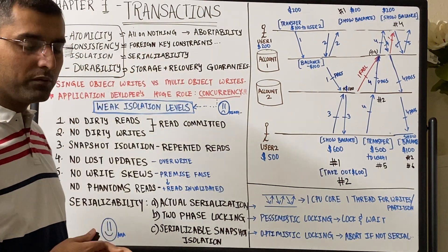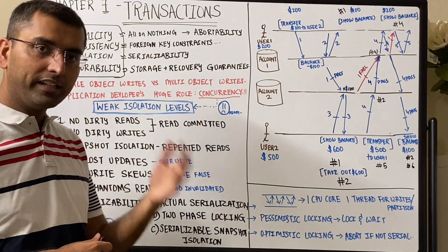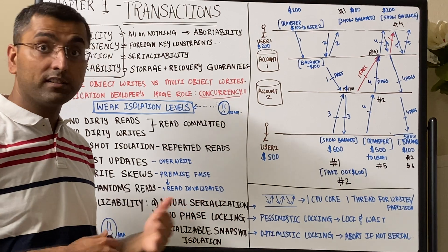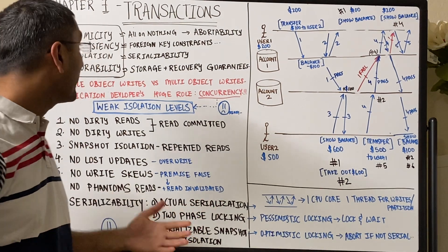Consistency is when we have foreign key references, unique constraints, and others that the database provides.